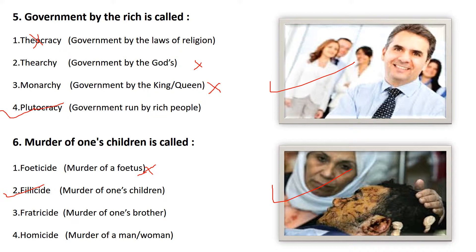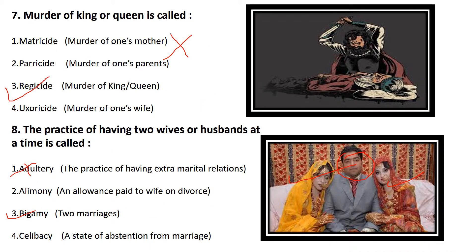The seventh is: murder of a king or queen is called. Matricide means murder of one's mother — not the answer. Patricide means murder of one's parents — not the answer. Regicide means murder of a king or queen — that is the right answer. Sororicide means murder of one's wife — not the answer. Remember all these one-word substitutions.